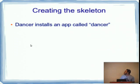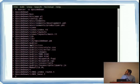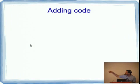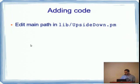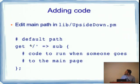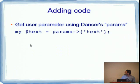We install Dancer. You know how it works. We create the skeleton using the Dancer application. That's when you install it. You're just running your directory structure. That's how it looks. We're going to add in code to the lib. There's a get slash and that's where you put your stuff.